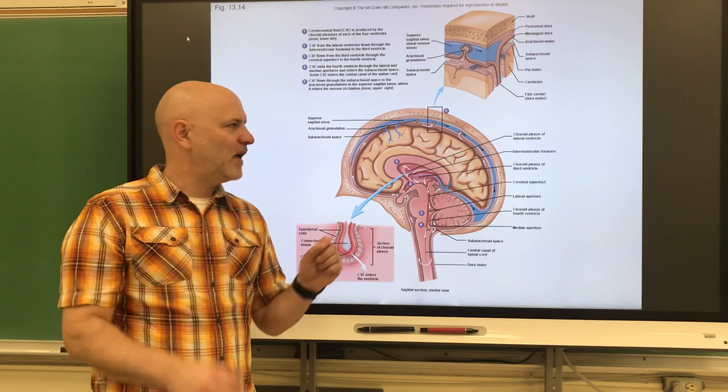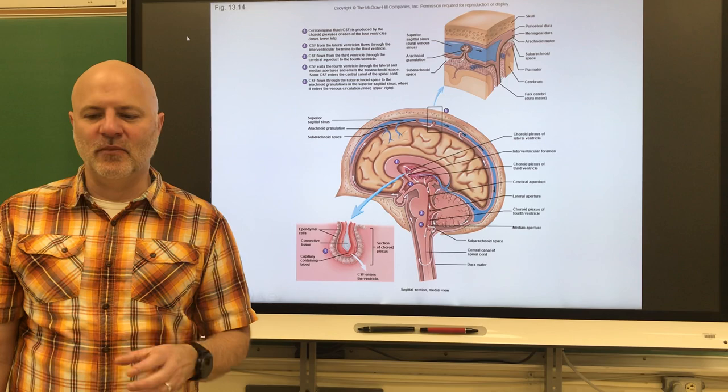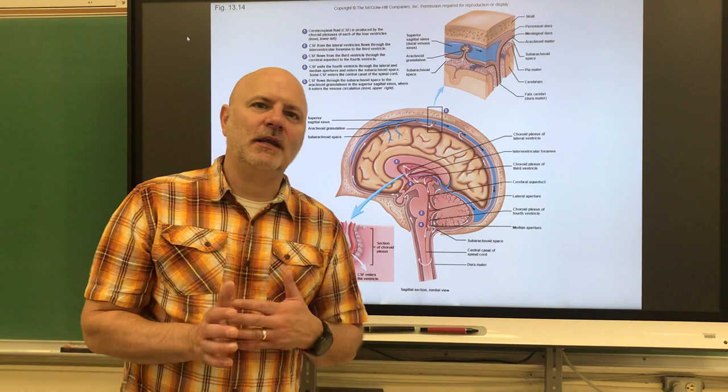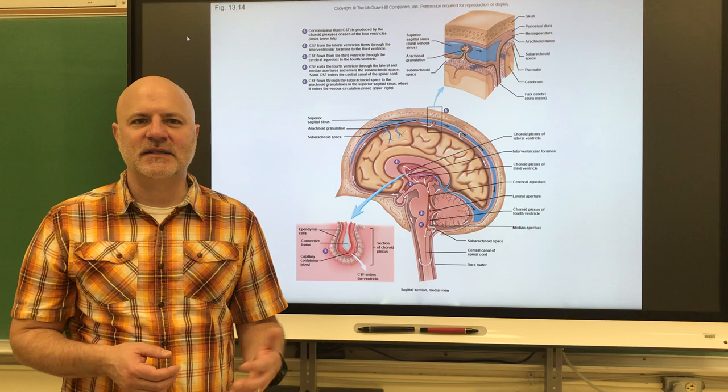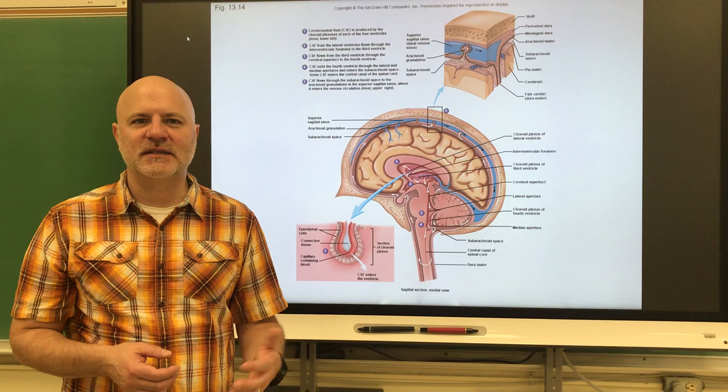The blood-brain barrier prevents large substances — including pathogens — from moving from the blood into the cerebrospinal fluid. However, one problem with this is that it can also prevent medications from getting in. So if a pathogen does get into the brain, it is very hard to get it out afterwards.